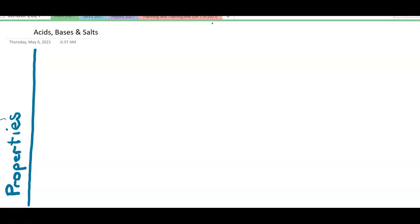We're going to start this section by looking at the properties of materials that are classified as acids, bases, and salts.